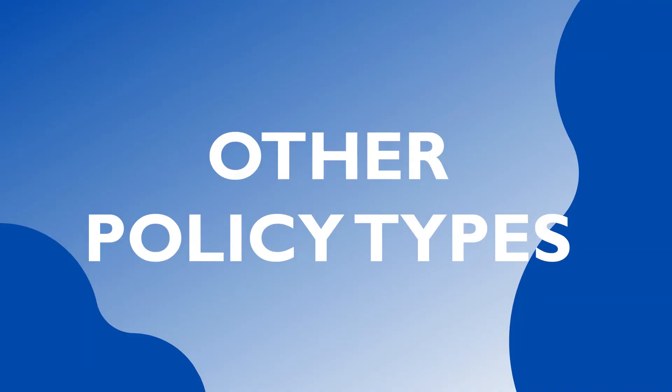I also talk about different policy types like substantive policy, symbolic policy, and the like, to help you understand the different kinds of policies that are made. This is a useful exercise to help us understand the difference between a policy that actually has a major impact on people and a policy that is made for symbolic or political reasons. They're important policies but they just behave differently, and people behave differently under those conditions than they do with other kinds of policies.